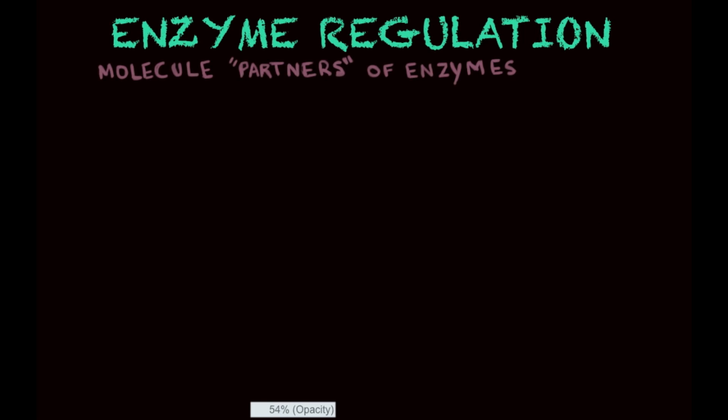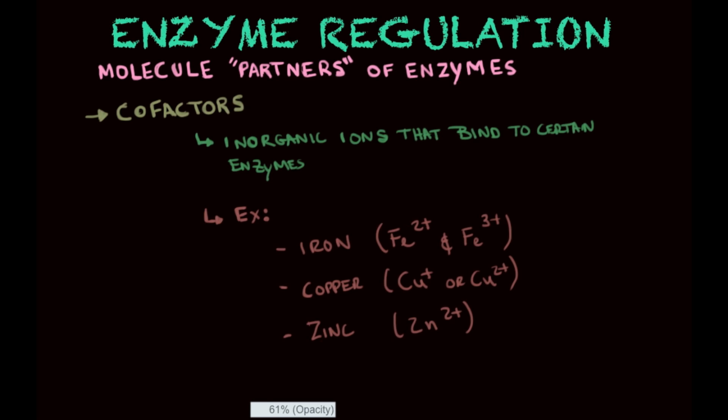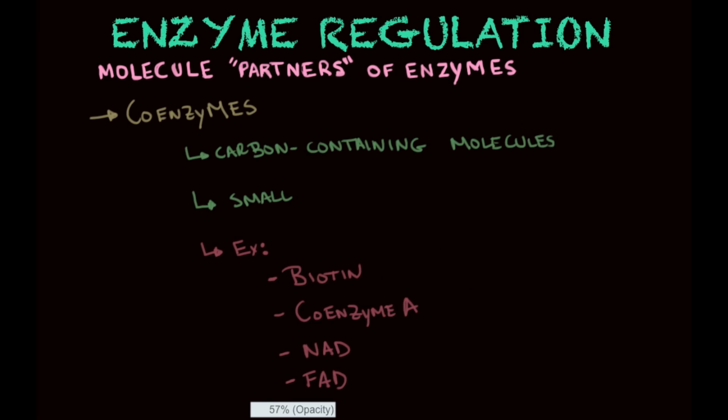Enzymes can also be aided with regulation through molecules that partner with them and help activate them. There are three examples. The first is cofactors, which are inorganic ions that bind to certain enzymes, such as iron, copper, and zinc. The second is coenzymes, which are carbon-containing molecules — usually smaller than the actual enzymes — that bind to the main enzymes and help them perform their function. Coenzymes are usually vitamins, biotin, coenzyme A, NAD, and FAD.